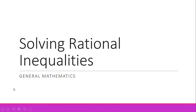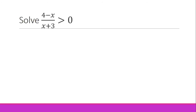It's another Math Day with Teacher Jenny, and we are here to talk about solving rational inequalities. Everything here will follow the pattern of a single term on the left side and a zero on the right side. So let's have this first example: we are to solve (4 minus x) over (x plus 3) greater than zero.